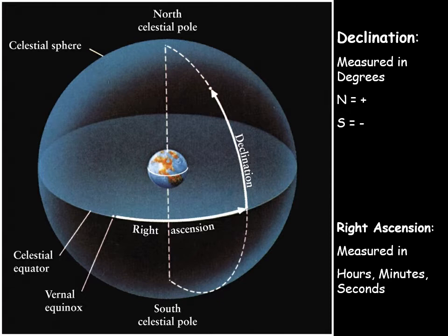The equivalent of longitude is right ascension. In longitude, we measure degrees east and west of the prime meridian. In space, because as the Earth rotates the entire sky goes around, we just pick a starting point and measure in one direction — eastward — because as Earth rotates towards the east, things are rising in the east, and you see what's further and further to the east.